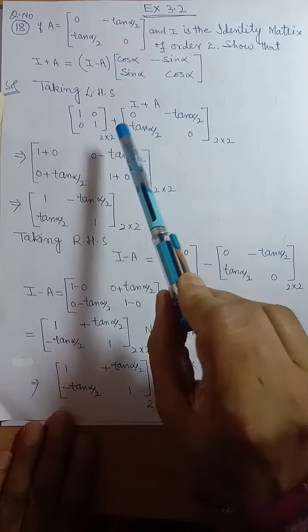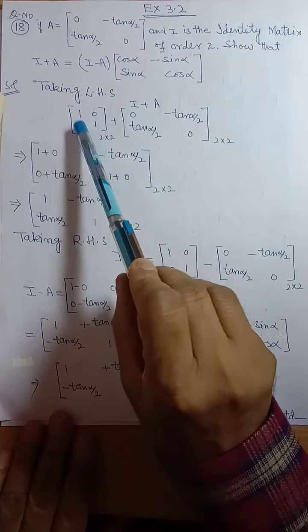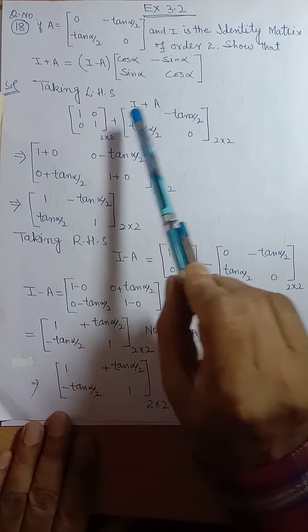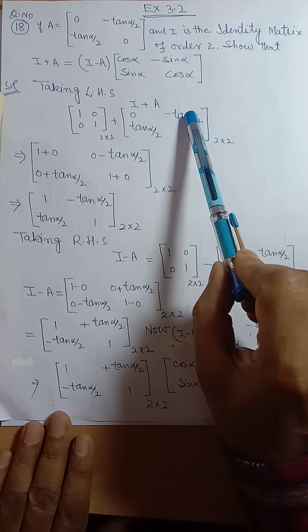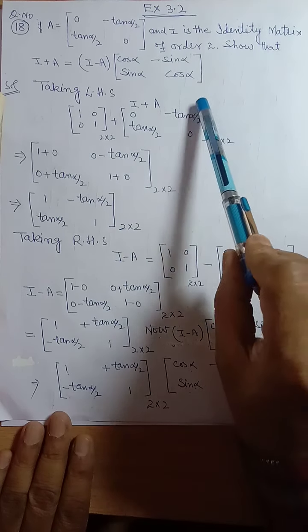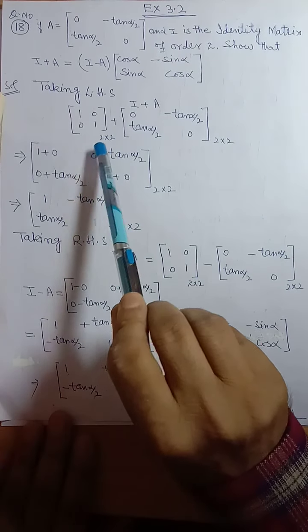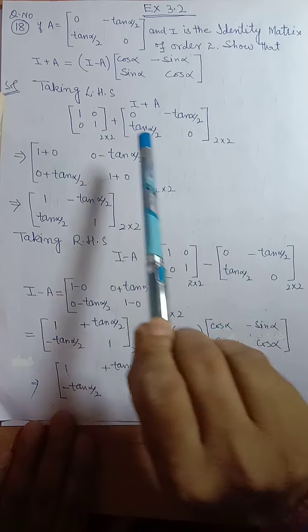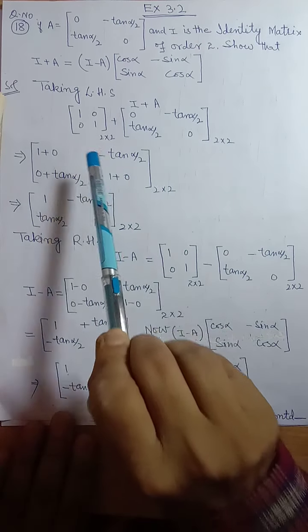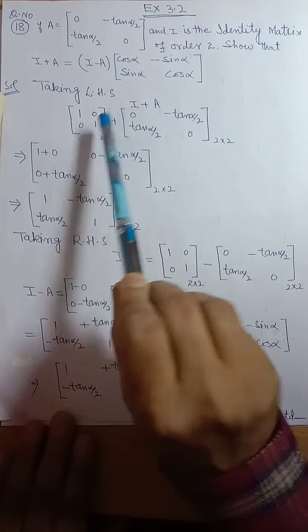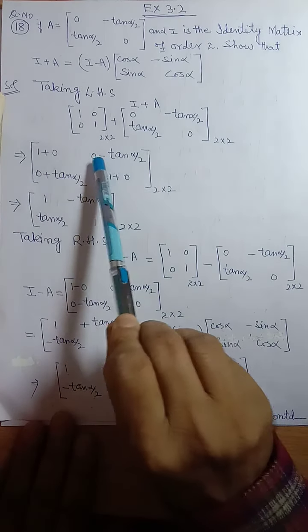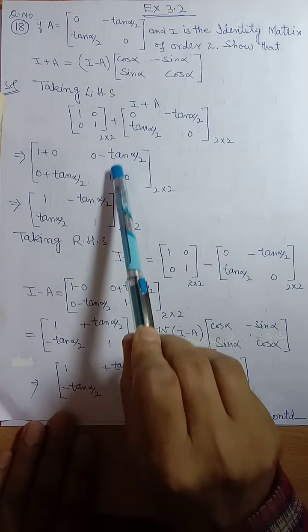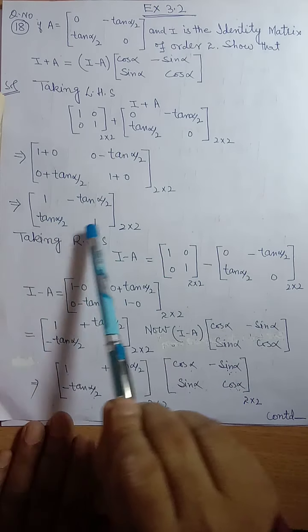Taking the left hand side, I plus A equals [1, 0; 0, 1] plus [0, -tan(alpha/2); tan(alpha/2), 0]. Both matrices are of order 2 cross 2, so they can be added. Adding corresponding elements: 1 plus 0, 0 plus (-tan(alpha/2)), 0 minus (-tan(alpha/2)), and 1 plus 0. So I plus A equals [1, -tan(alpha/2); tan(alpha/2), 1].